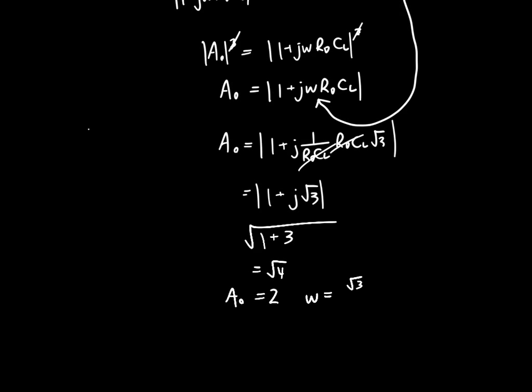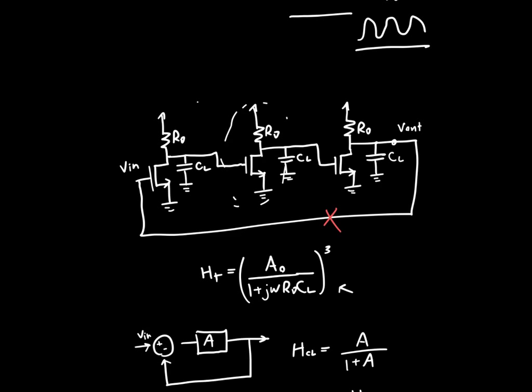Going back to the original circuit: no matter what RD·CL is, the circuit will oscillate at a frequency of √3 / (RD·CL). RD and CL allow us to tune the frequency of oscillation. The DC gain must be 2, and since the DC gain of a common source amplifier is just GM·RD, that must equal 2. So the gain condition effectively fixes RD, and then we choose the load capacitance to tune the frequency.